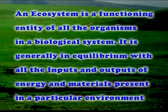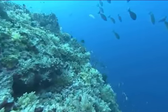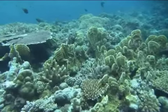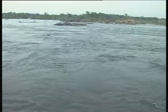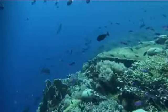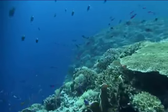An ecosystem is a functioning entity of all the organisms in a biological system, generally in equilibrium with all the inputs and outputs of energy and materials present in a particular environment. It is the basic ecological unit of study. An ecosystem is comprised of habitats, biological communities, and ecotones. Environment is the total set of circumstances surrounding life. A group of organisms and the environment with which they interact is known as an ecosystem — a self-regulating association of all organic communities and their non-living environment.